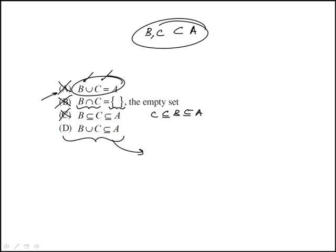Finally, D is the correct answer. That is B union C, the collection of all elements in B and C together, has to be a subset of A because both B and C are subsets of A. So the answer is D.